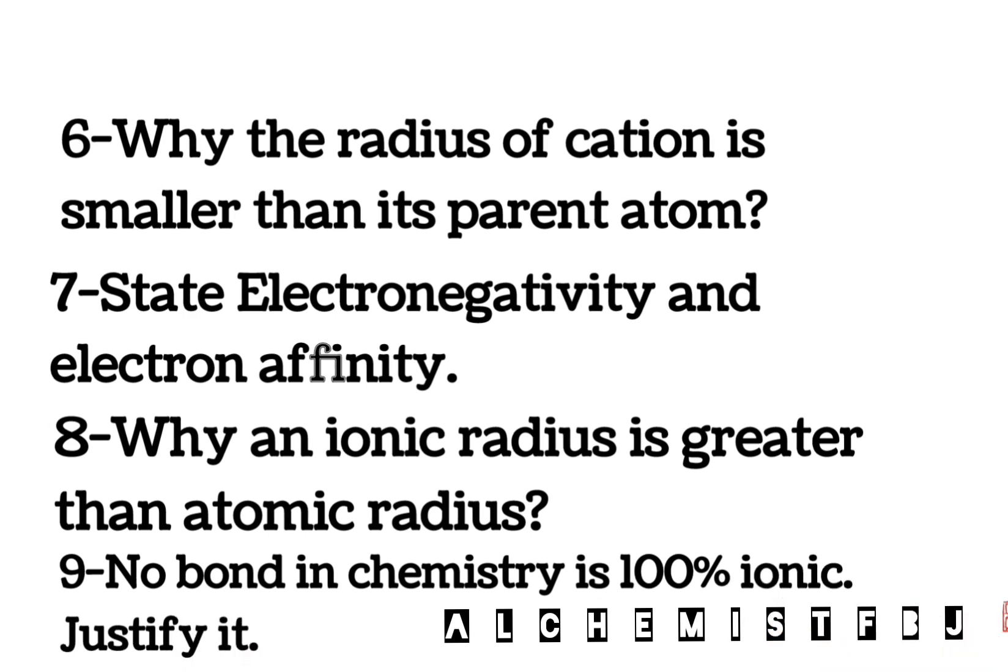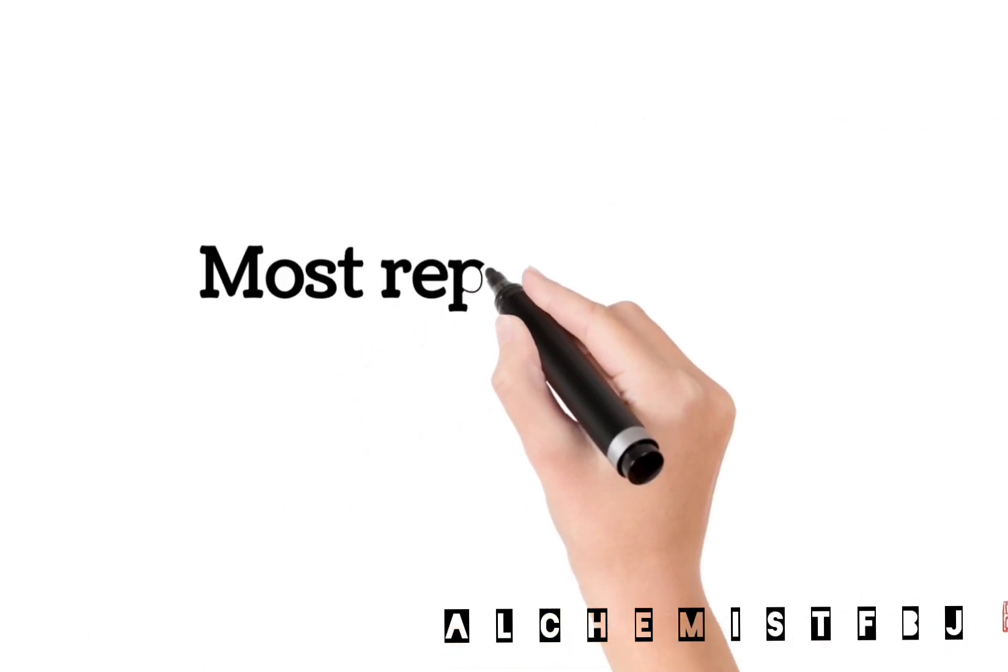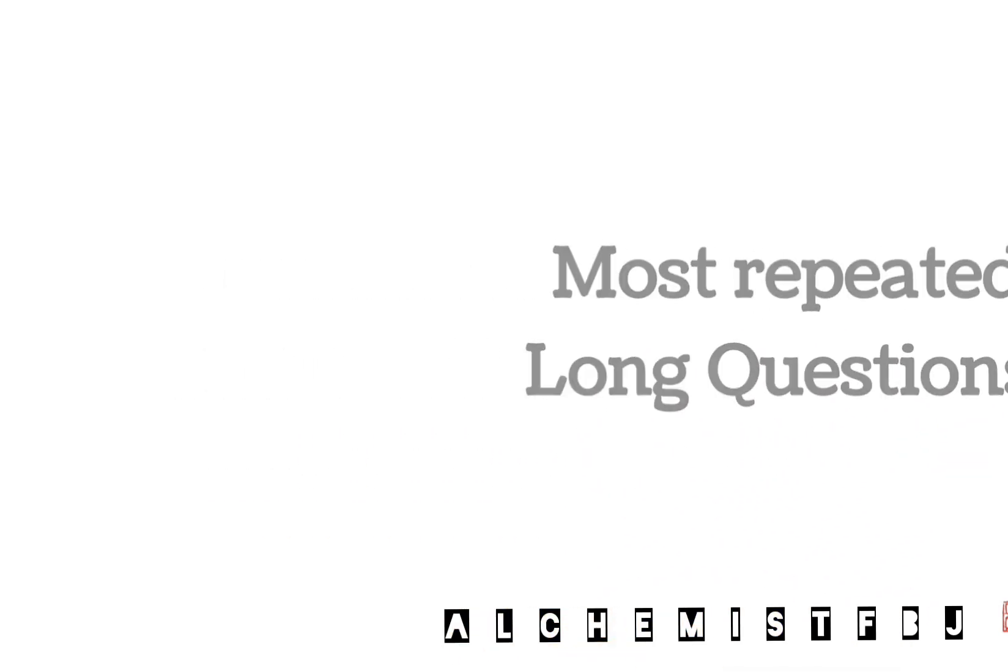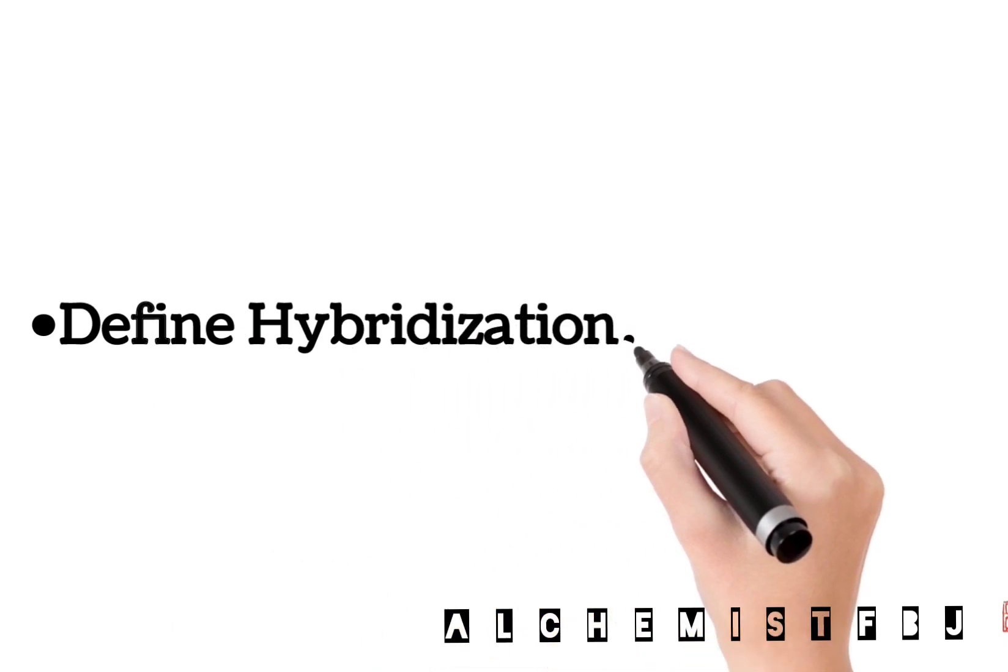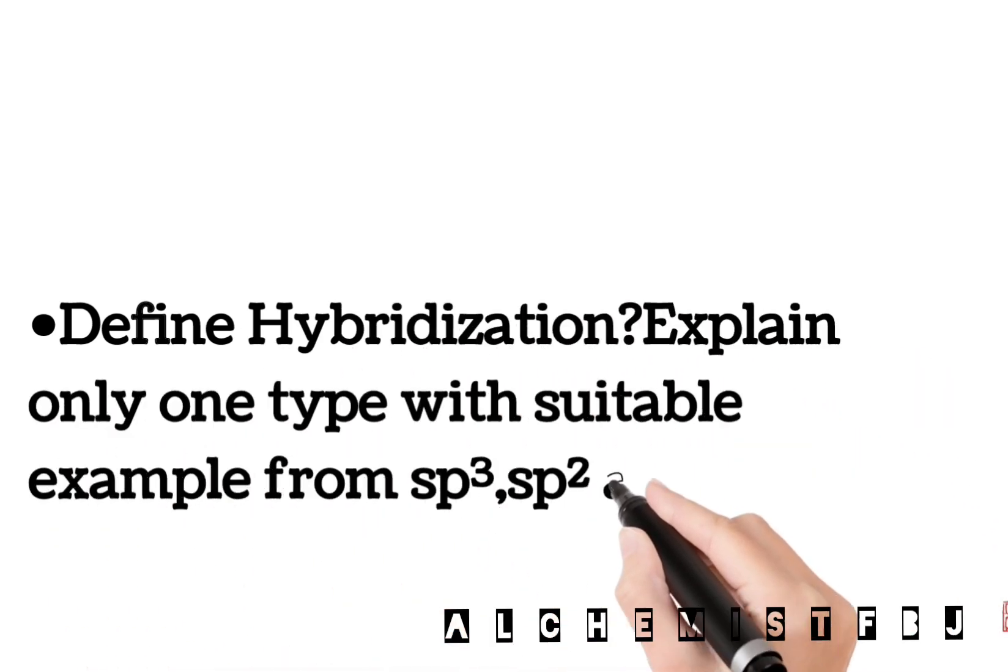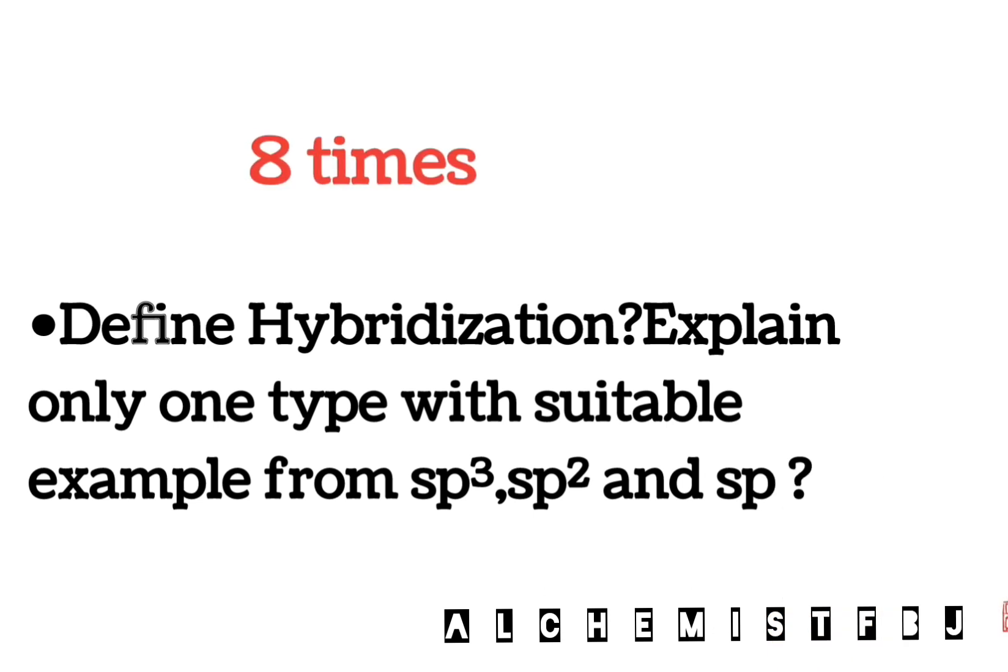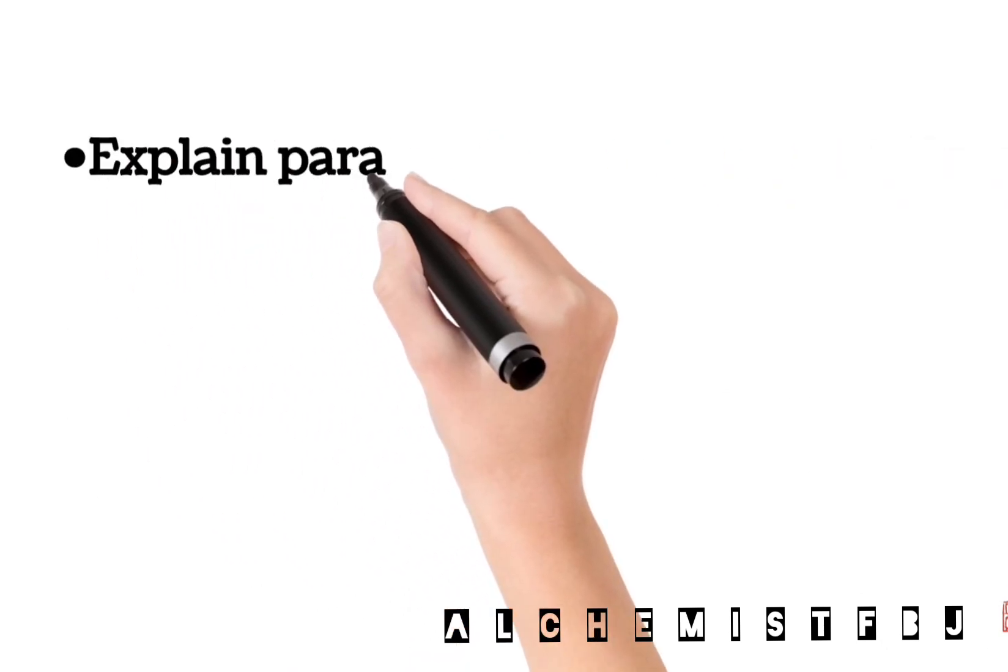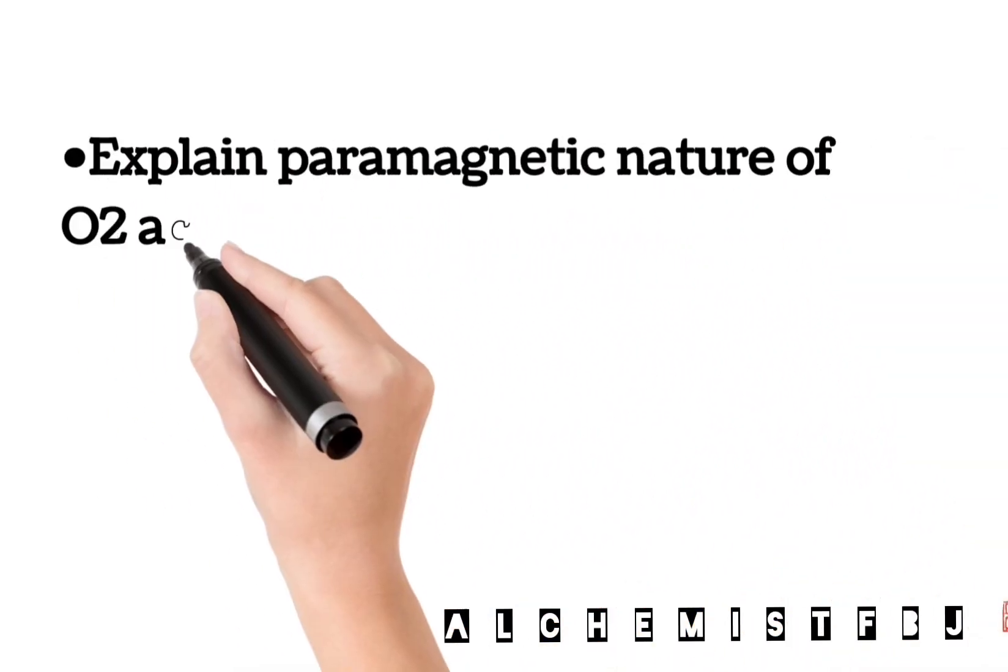Most repeated long questions from Chapter 6 first year chemistry. Define hybridization, explain only one type with suitable example from sp3, sp2, and sp. This is an 8 times repeated long question. Next, explain paramagnetic nature or behavior of O2 according to molecular orbital theory, 7 times repeated long question.